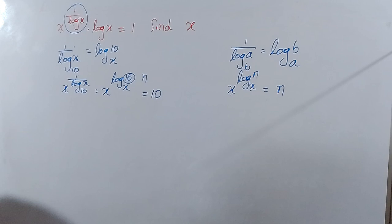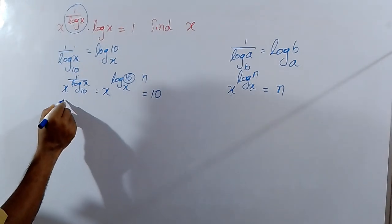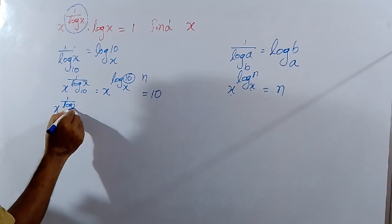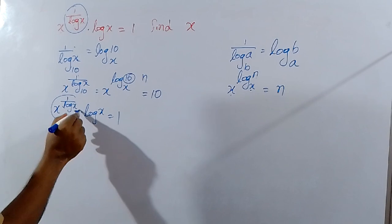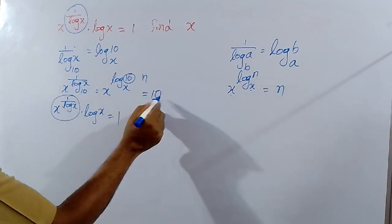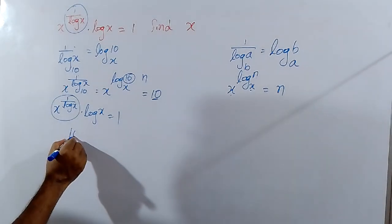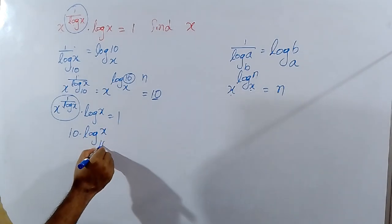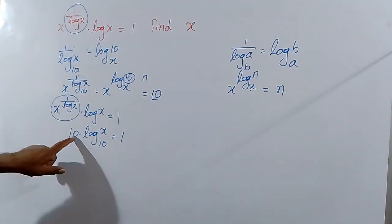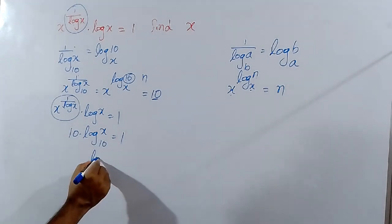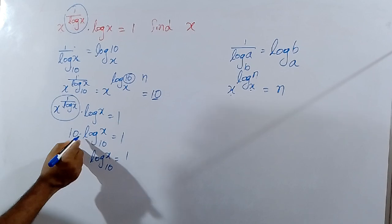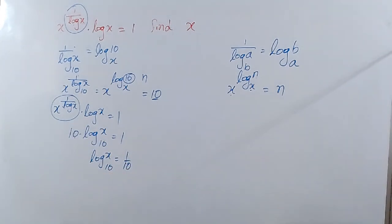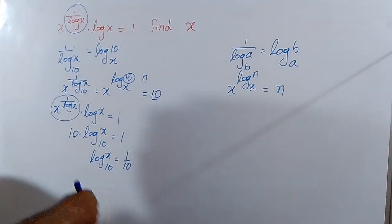Now, final question: x power 1 by log x into log x equal to 1. x power 1 by log x base 10 equal to 10, so 10 into log x base 10 equal to 1. This 10 will be changed to the side, so log x base 10 equal to 1 by 10.